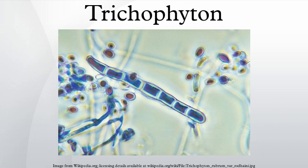Macroconidia are few or absent in many species. Microconidia are spherical, piriform to clavate or of irregular shape, and range from 2 to 3 by 2 to 4 µm in size.